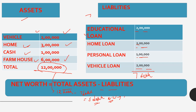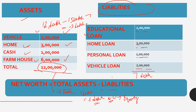This net worth is called equity. Equity equals total assets minus total liabilities. Now consider a scenario for any company where total assets are 12,000,000 but total loans are 15,000,000. In this case the company's condition is not good.